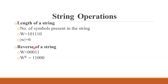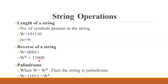The next operation is reverse of a string. For example, let the string w be 00011. Its reverse is represented as w raised to r, which is 11000. A string is called a palindrome when w equals w raised to r, meaning the string is the same as its reverse.